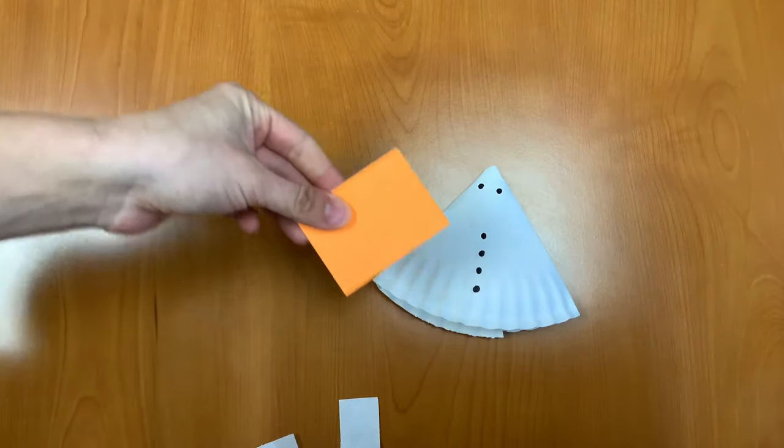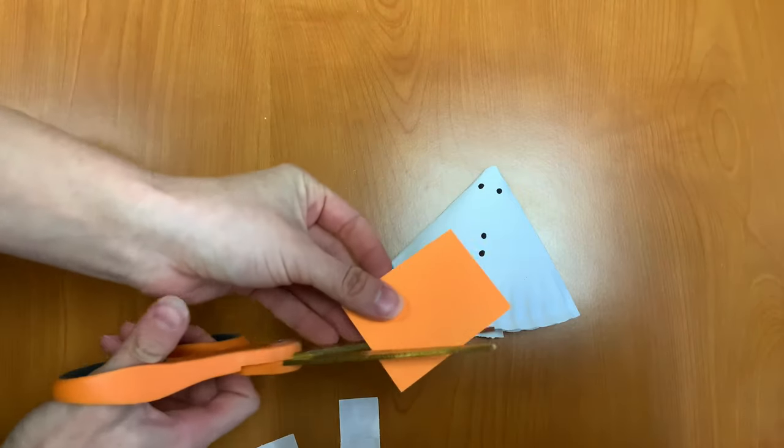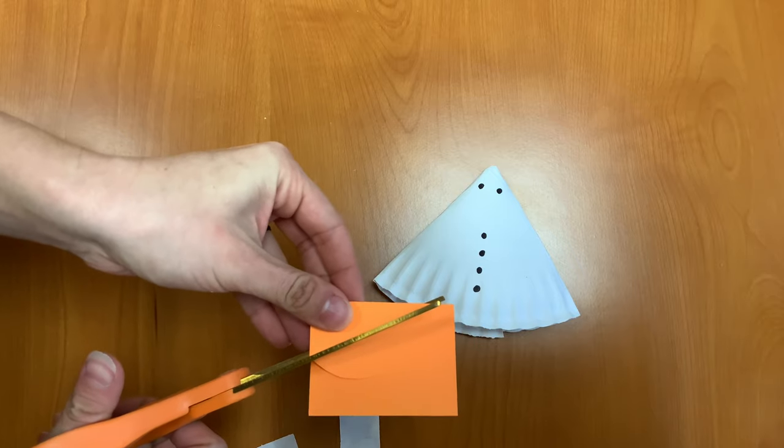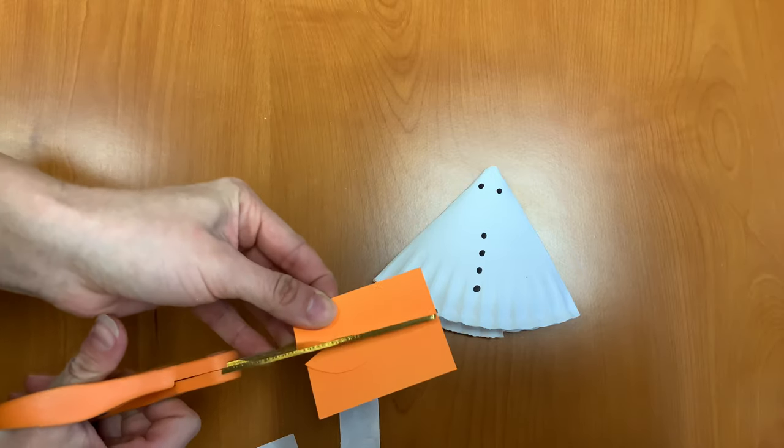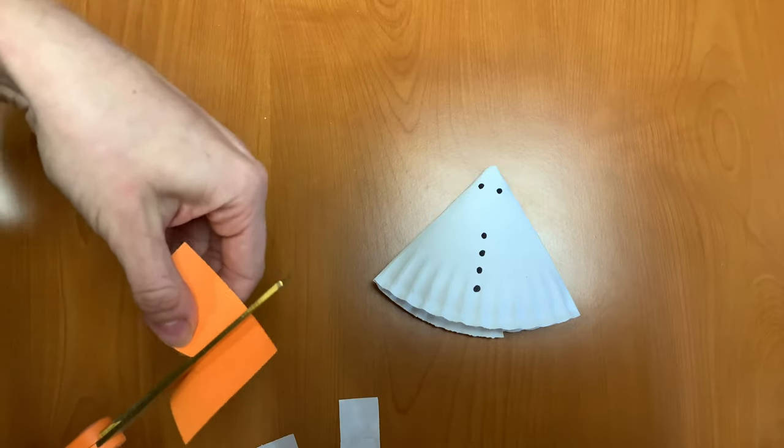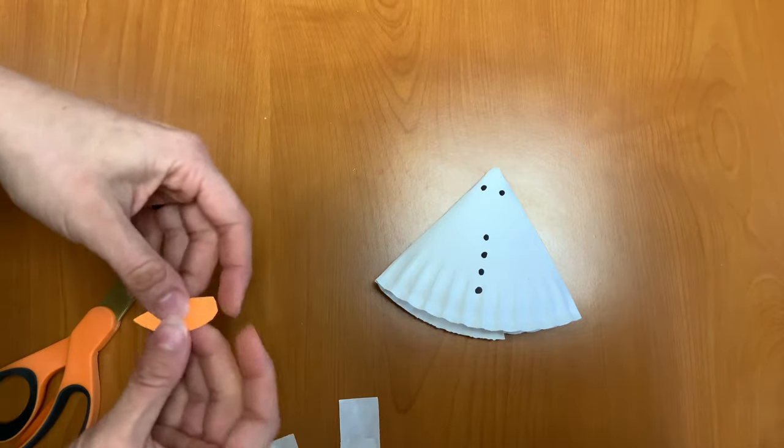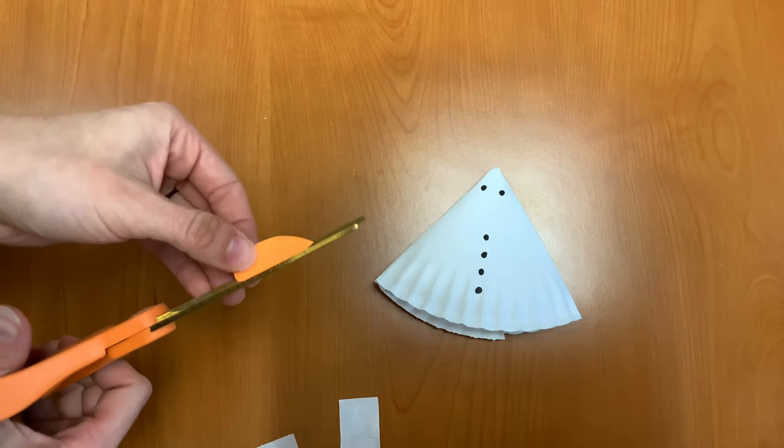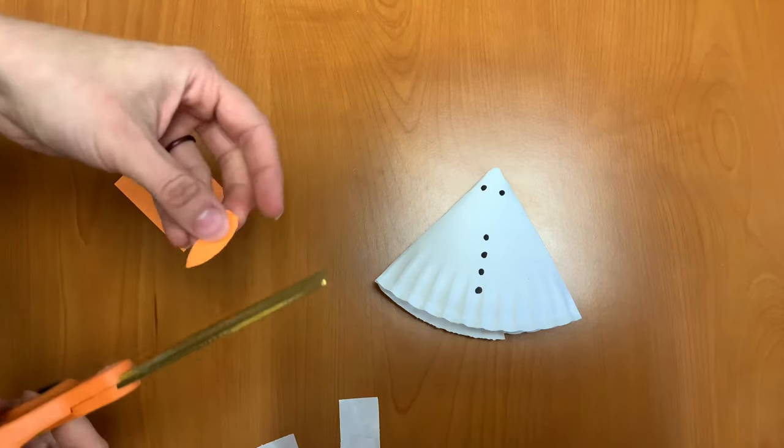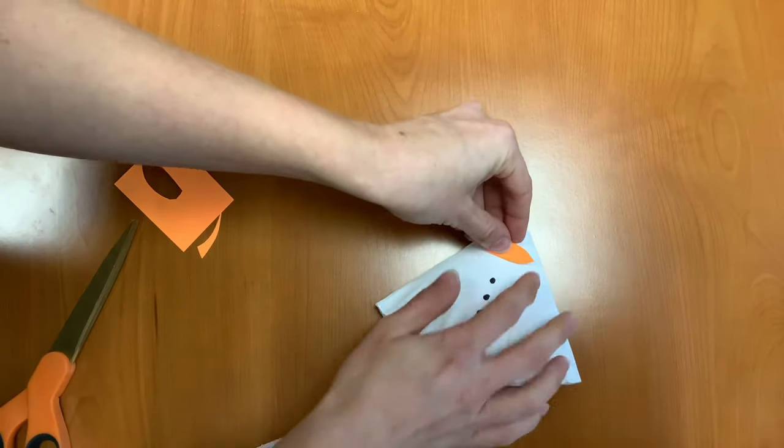Next, we're going to take our orange piece of paper and cut out a carrot shaped nose. So carefully, you can cut out a carrot shape. And that's a little bit too big, so I'm going to cut my nose down a little bit more. There we go. That'll work.